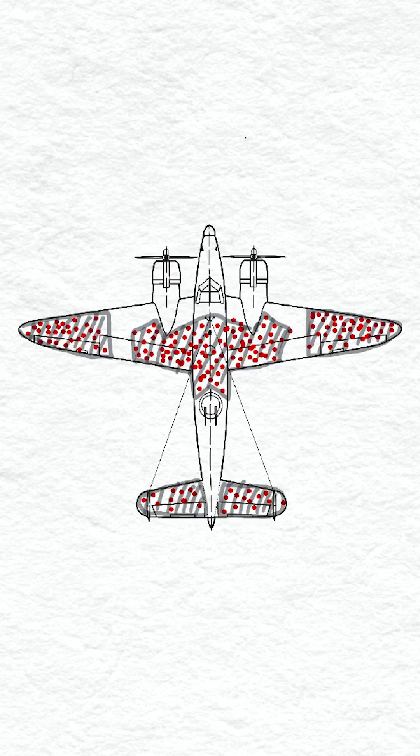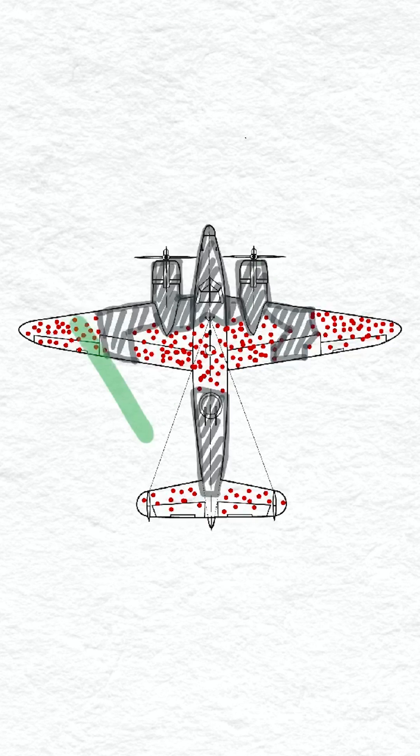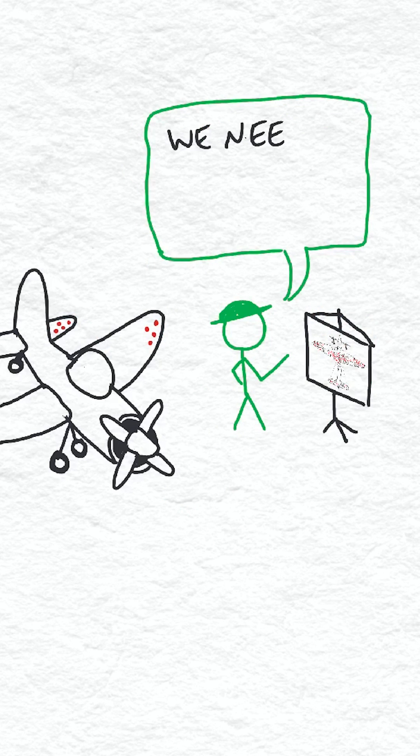You may think it's best to cover up the areas with the red dots. It's actually the opposite. When you think about it, every bullet hole came from a plane that survived. The planes that didn't make it never became part of the data sample.